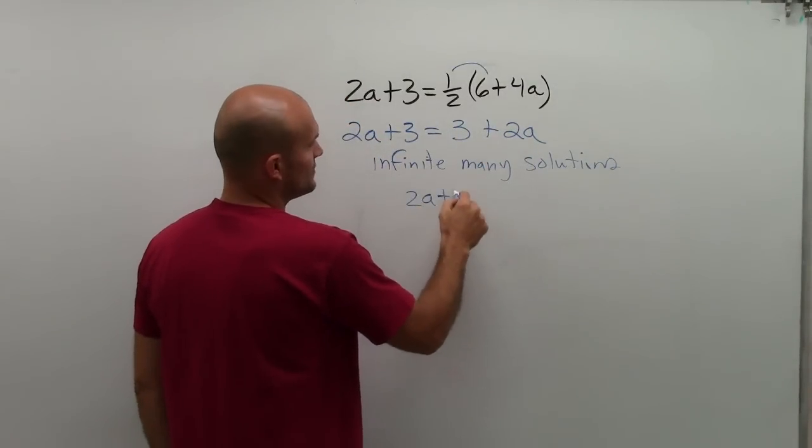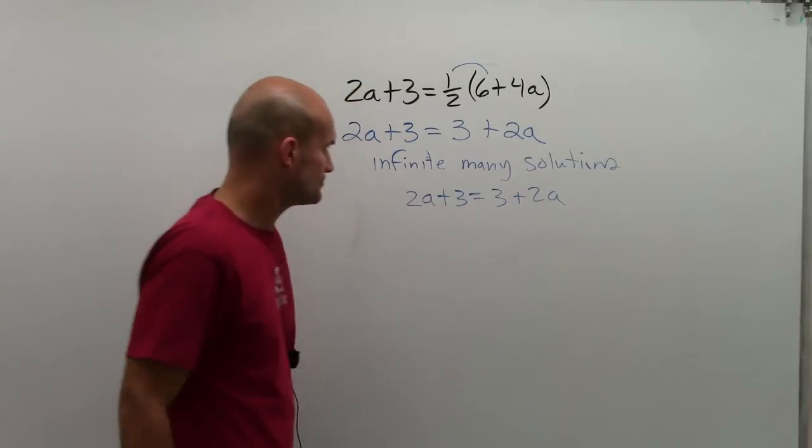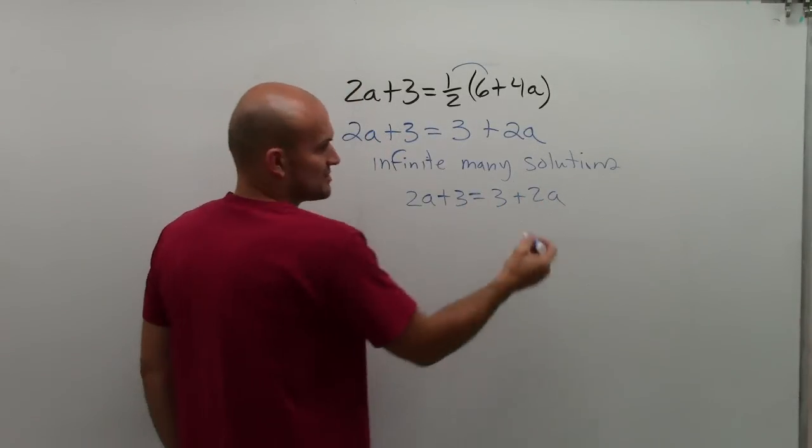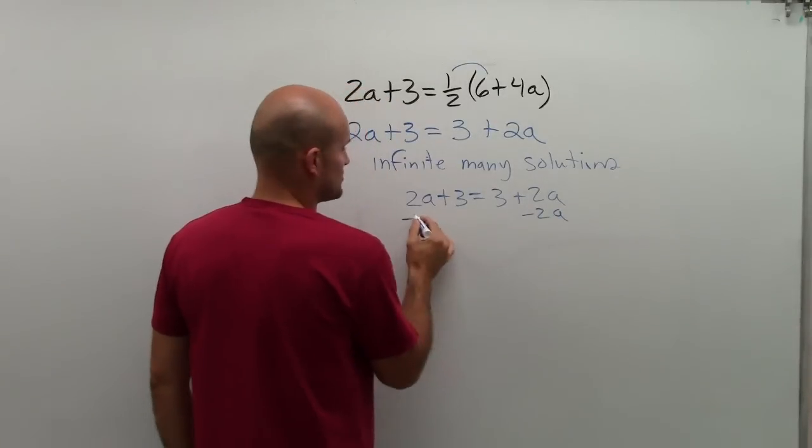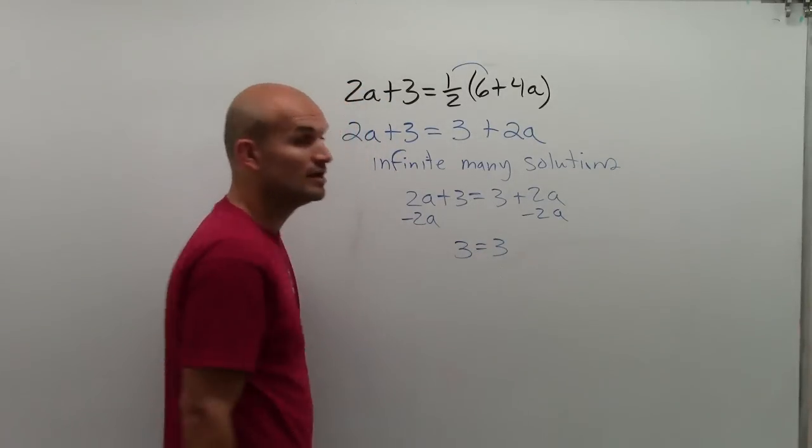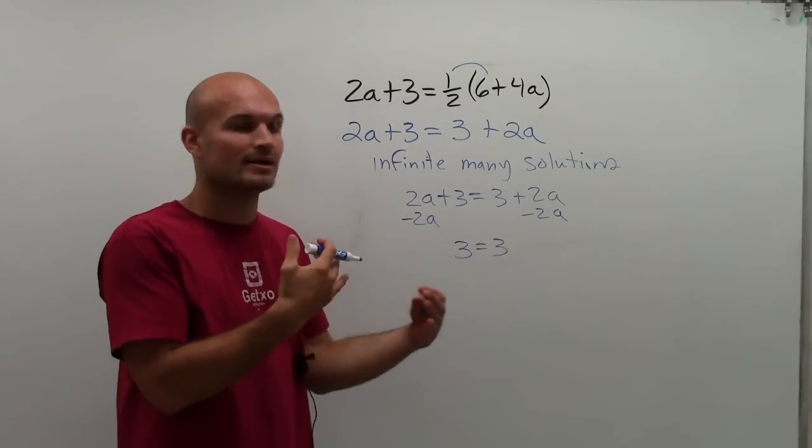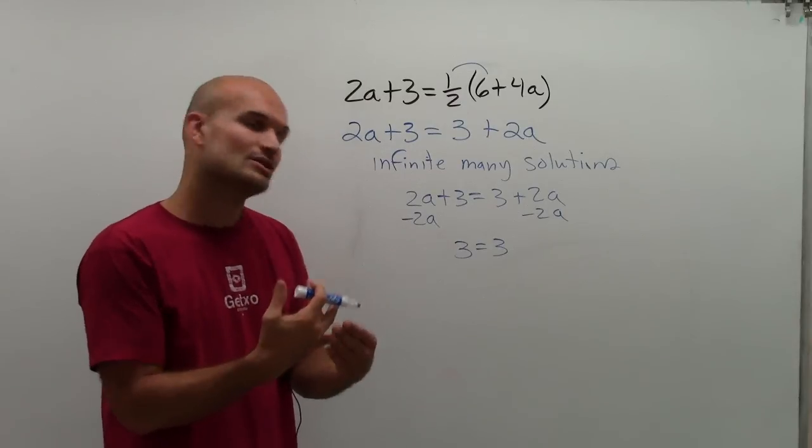Now, let's take a look at some other ways that maybe if you don't see it, you'll understand it. So let's subtract the variables like we would do for a normal equation. I'd subtract the 2a on both sides. I would get 3 equals 3. Does 3 equal 3? Of course it does. So therefore, that's something that can tell you, oh, when you have that, it's going to equal each other.